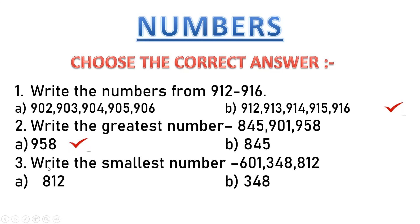Question number 3: write the smallest number. You have to select the smallest number. This is starting with 600. This is starting with 300. This is starting with 800. So which will be the smallest? Which is starting with 300? This is 600, and 1. This is 812. So definitely this is starting with 3 — 348. So which is the answer? 348, because this starts with the smallest number, 3.